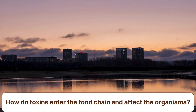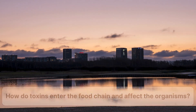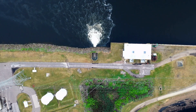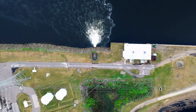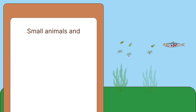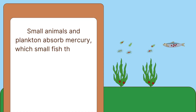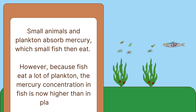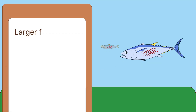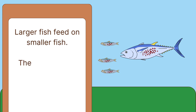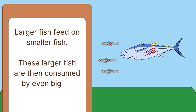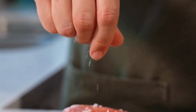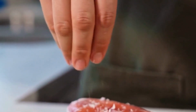How do toxins enter the food chain and affect the organisms? One example is the introduction of mercury in bodies of water. It used to enter the ecosystem through insecticides and paints. Small animals and plankton absorb mercury, which small fish then eat. However, because fish eat a lot of plankton, the mercury concentration in fish is now higher than in plankton. Larger fish feed on smaller fish, and these larger fish are then consumed by even bigger ones, like tuna. This means tuna now has a high mercury concentration, also known as biomagnification.